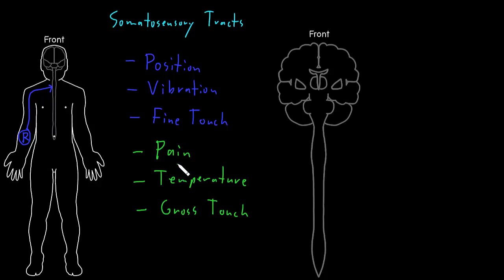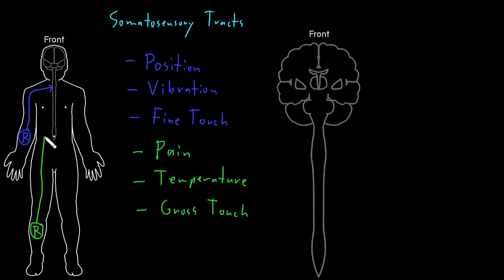The same is true for this other big category of types of somatosensation. Let's say we have a receptor down in the leg — a receptor that can detect noxious stimuli that can cause the experience of pain. That information can travel through nerves of the peripheral nervous system and then spinal nerves to enter the spinal cord and deliver that information into the central nervous system.